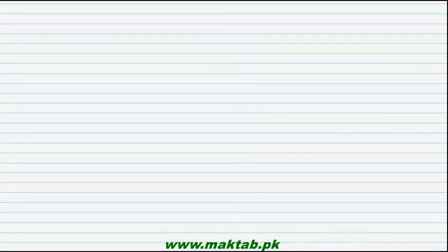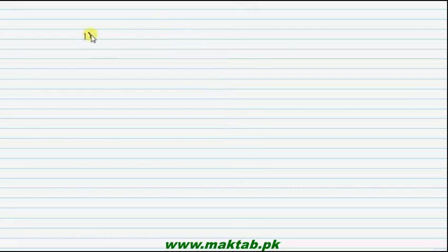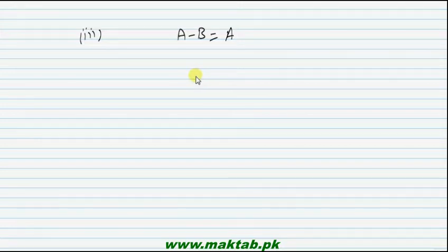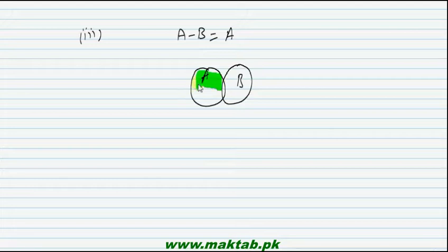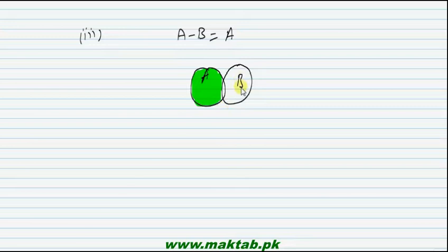Now part 3: when is A minus B equal to A? Looking at the overlapping case, A minus B gives only part of A — not all of A, because the common part with B is removed. So that case doesn't work. In another case where B is a subset of A, A minus B gives empty set — also not equal to A.